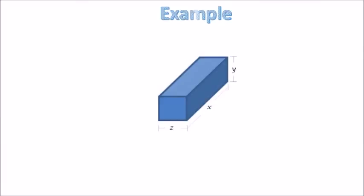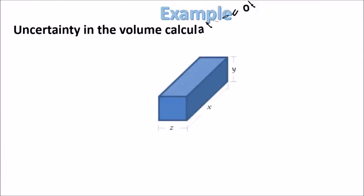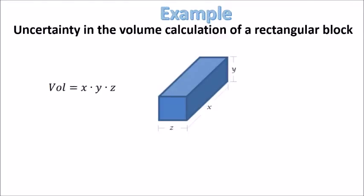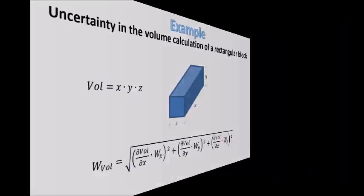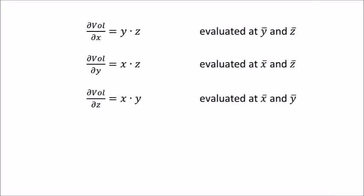For example, the uncertainty in the volume calculation of a rectangular block. The volume is given by the following formula. The maximum uncertainty is given by the following formula. Each derivative is computed as follows. The final formula, plugging in the derivatives, will look something like this.